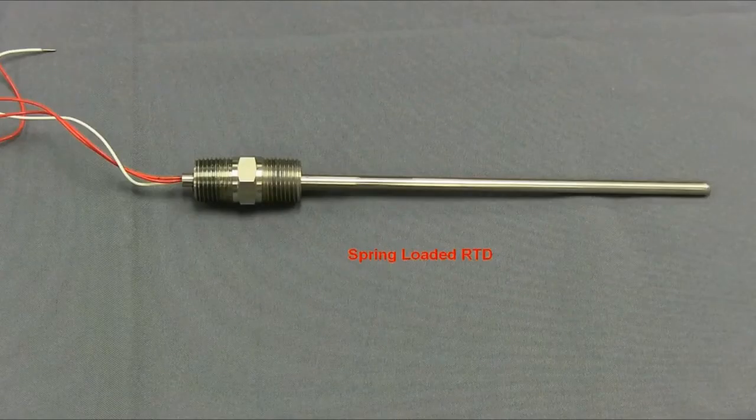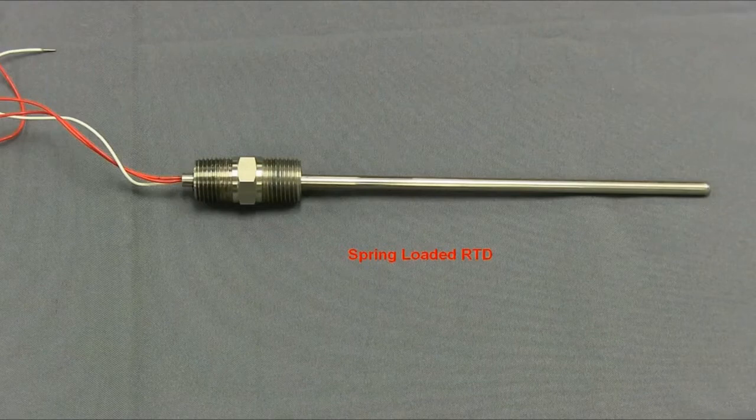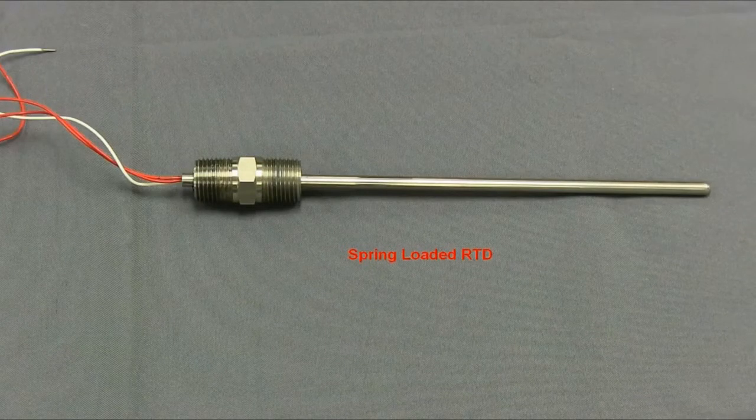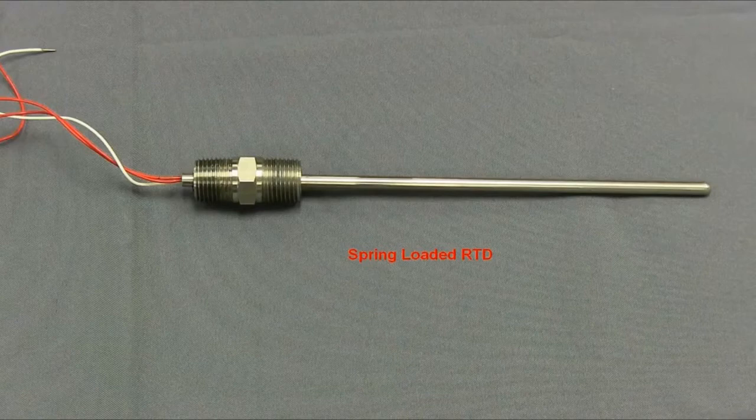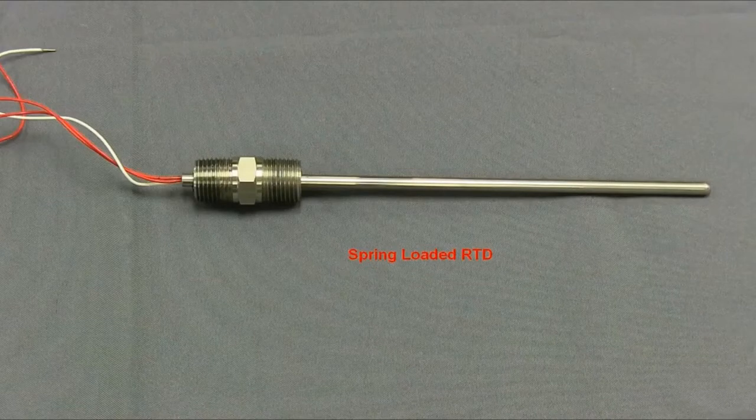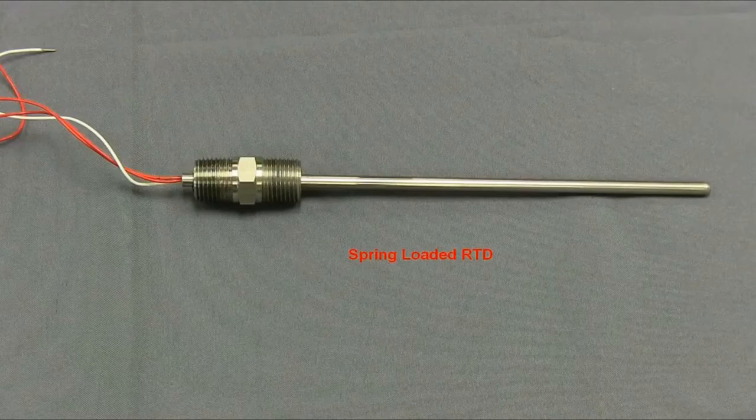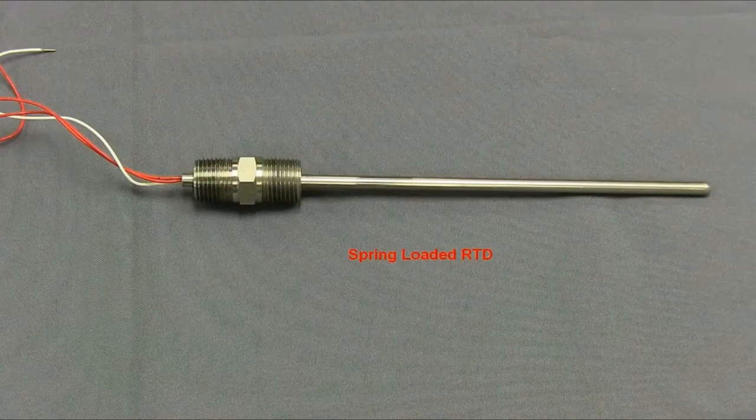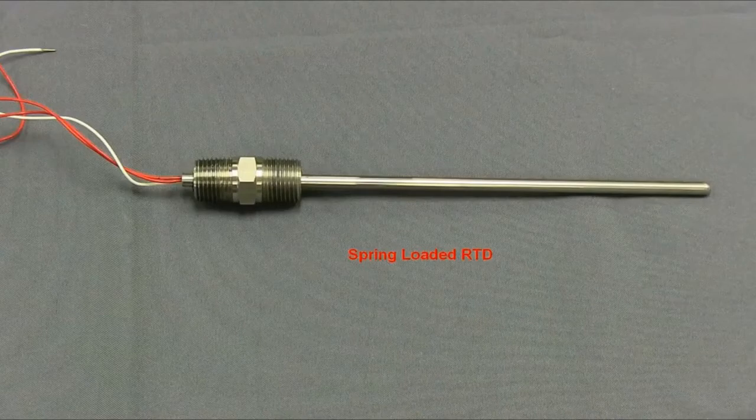The sensors used with the thermowell mounted transmitter are always spring loaded. This ensures the sensor is always in contact with the bottom of the thermowell. This is necessary because the sensor takes the measurement at the very tip. A sensor not making contact with the bottom of the thermowell will create incorrect readings.